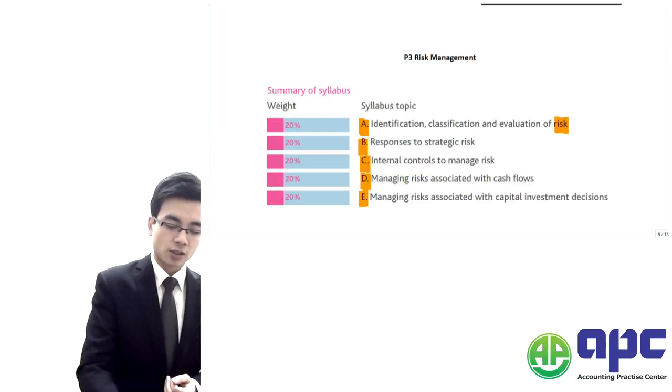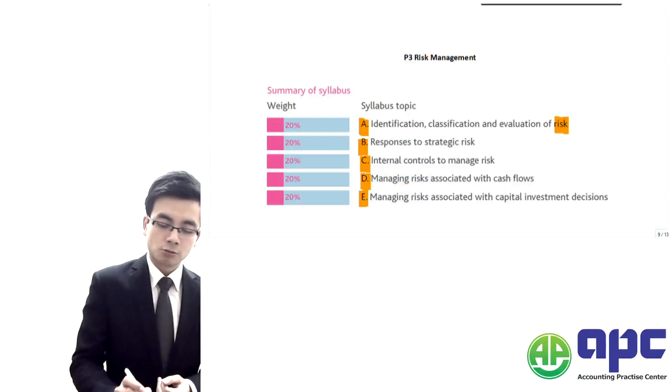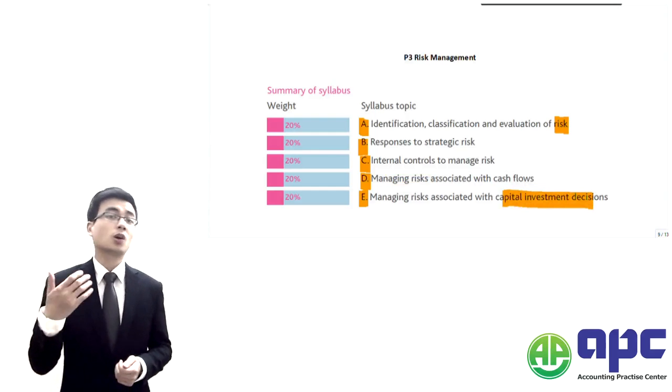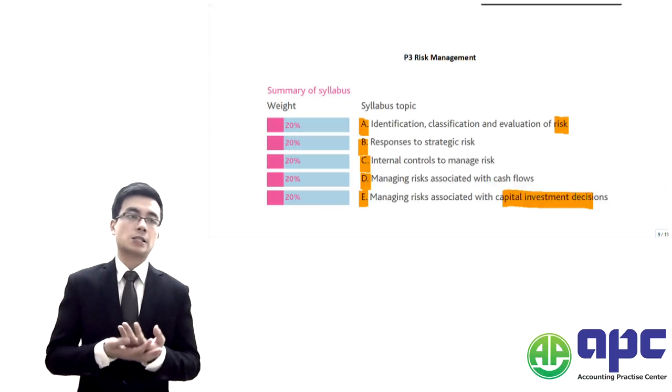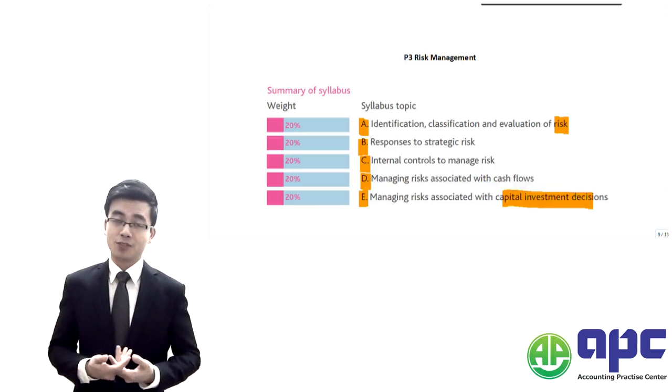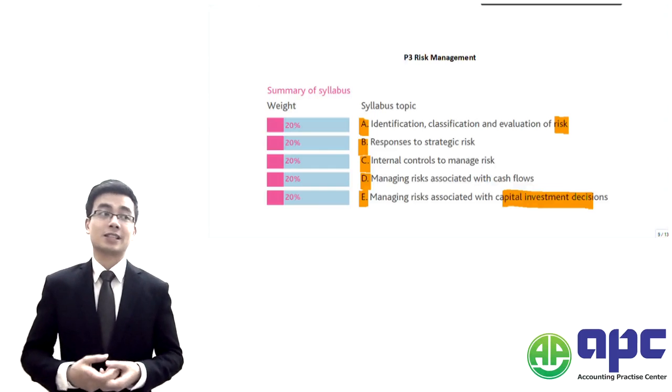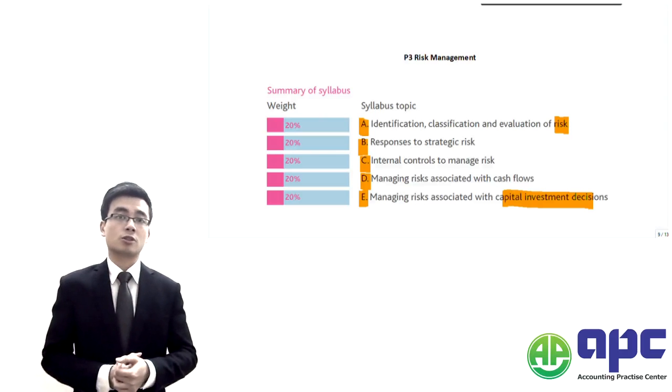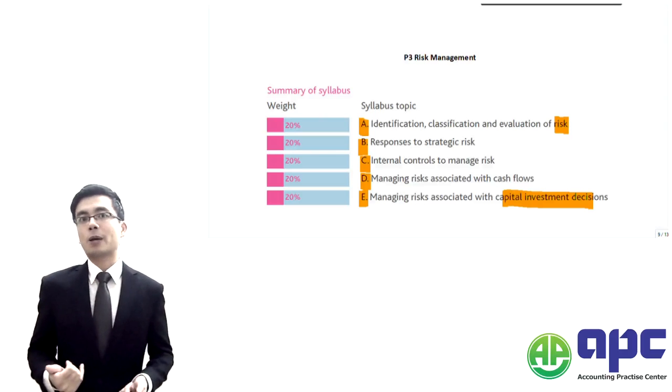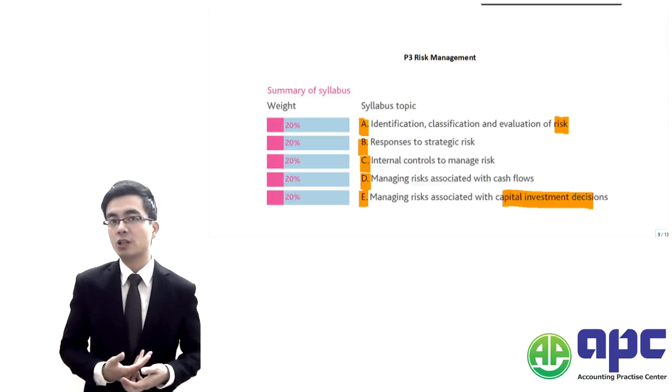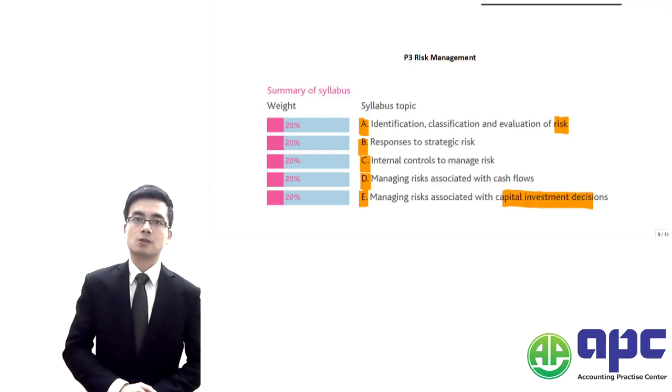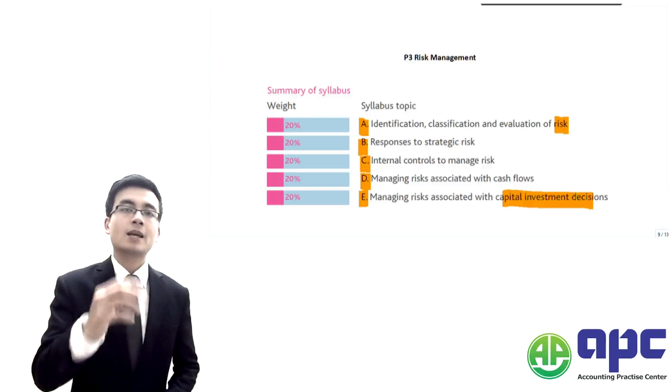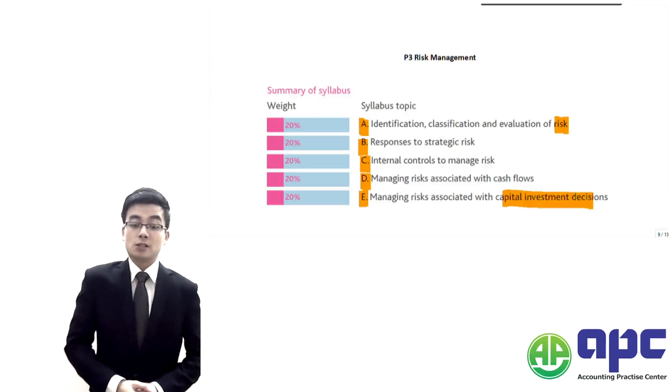The last section is where we're going to look at the risks associated with capital investment. What I mean by capital investments is what you've seen in your paper F1 as well as paper F2. The capital expenditures that we've made are talking about the non-current assets. For example, we're going to spend the money buying the factory or machinery. That will be the capital investments.